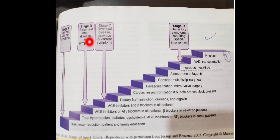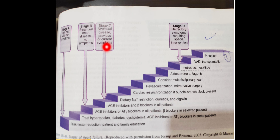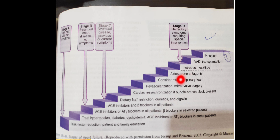Stage B is structural heart disease with no symptoms — start ACE inhibitors as first choice to prevent cardiac remodeling, with beta blockers in selected patients. Stage C involves structural disease with previous or current symptoms — continue ACE inhibitors and beta blockers, and add diuretics and digoxin with sodium restriction. As symptom severity increases, you can escalate to cardiac resynchronization, revascularization, aldosterone antagonists, and multi-specialist team involvement.